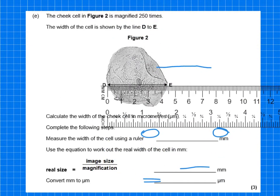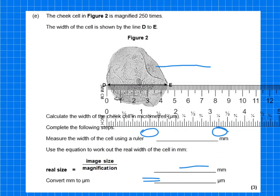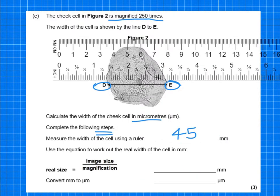The first one is relatively easy because they want you to measure the width of the cell. I'm going to measure the distance, and the distance is 45 millimeters. It then says use the equation to work out the real width of the cell. We know the image size is 45 and we know the magnification is 250, so that equals 0.18 millimeters. Then convert millimeters to micrometers by timing it by a thousand, so 0.18 times a thousand gives you 180 micrometers.